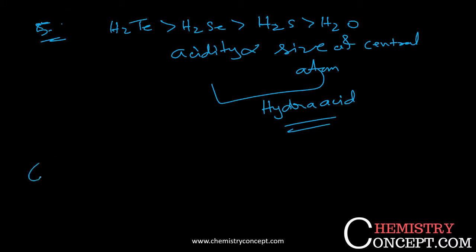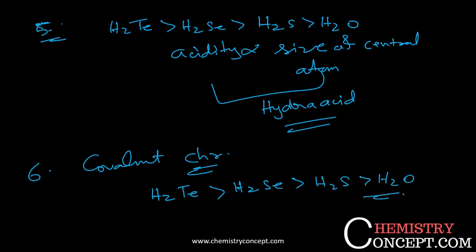The sixth property is covalent character. H2Te is more covalent as compared to H2Se, as compared to H2S, and further H2O. Because the electronegativity is going to increase from tellurium to oxygen, the electronegativity difference is also going to increase. So what happens? This molecule having less electronegativity difference is less covalent.